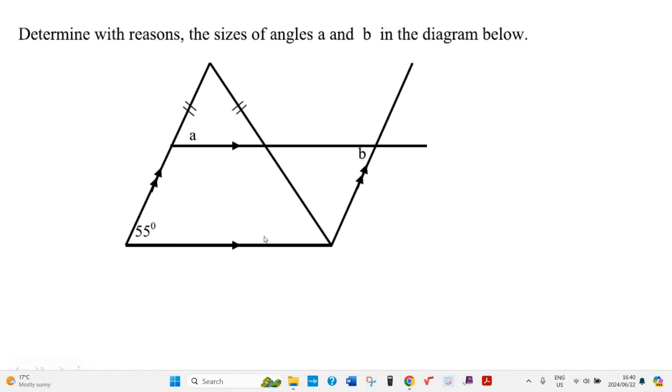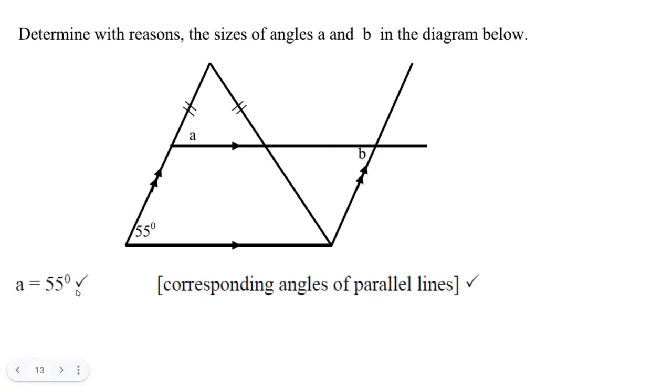Well, these two are parallel lines, and these two are called corresponding angles. They're in the corners of an upside-down F here. Those are corresponding angles. Because of that, A equals 55 degrees. Corresponding angles of parallel lines.